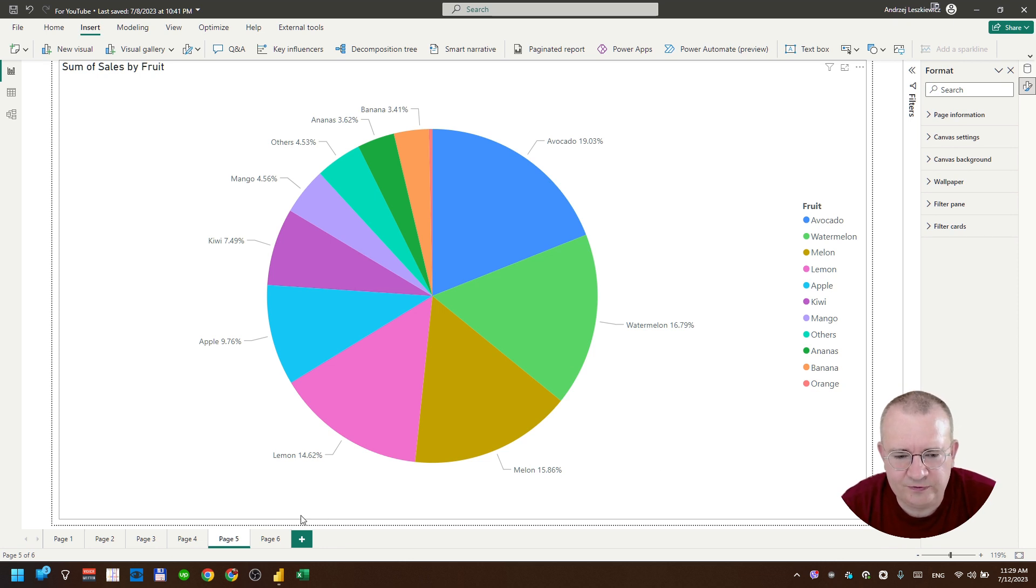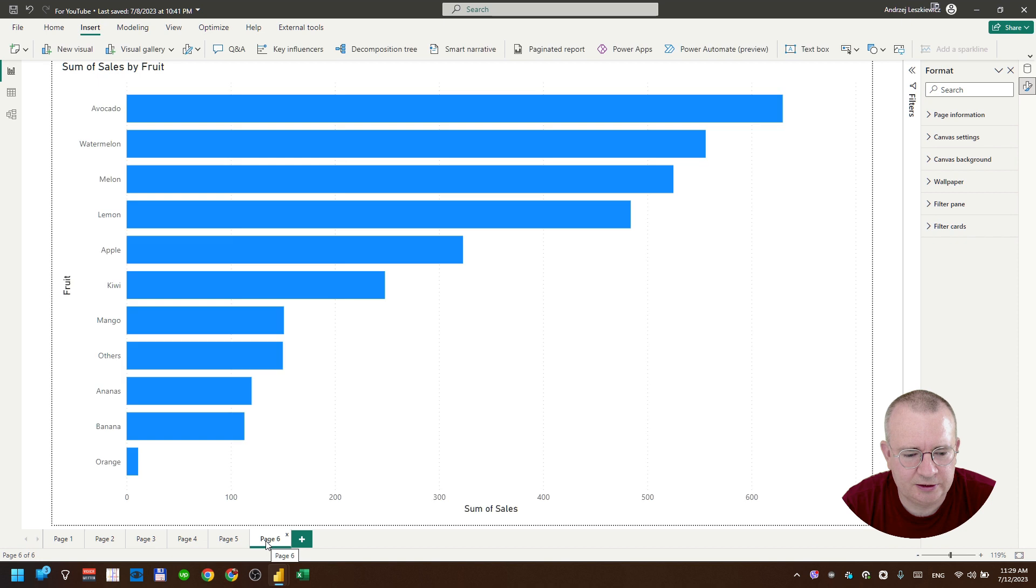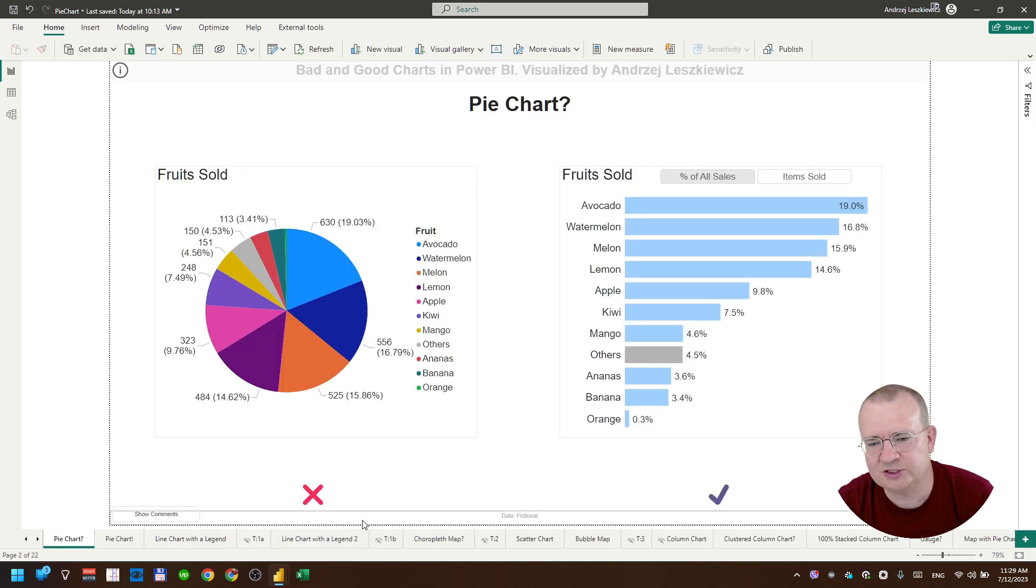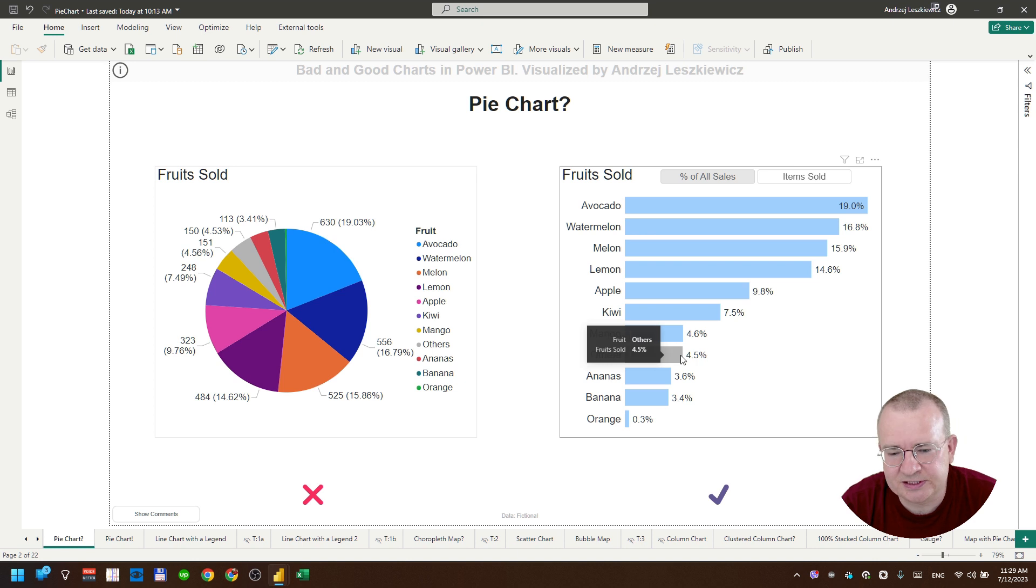So if we have choice of pie chart or just a simple bar chart, this bar chart will work much better. Let me show a bit improved version of the bar chart. So here I just used color, gray color to highlight others category because it just represents different kind of data. Because every other bar is just for one single fruit, and other is consolidated data. So it's useful to highlight it with colors. So we are using colors much better in this chart. We are highlighting something important.